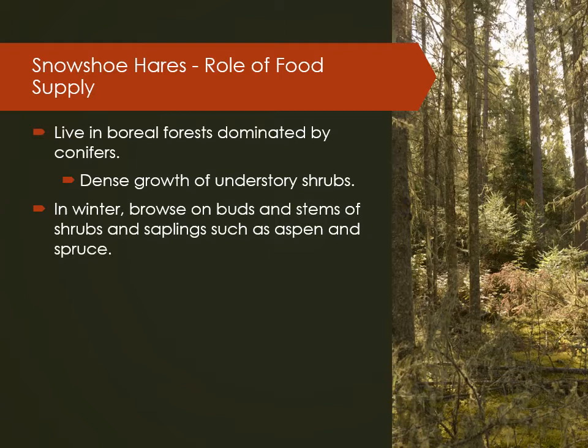Snowshoe hares can reproduce just like rabbits, with an ability to double their population in a year. If they can double their population, they're obviously going to be eating a lot of food. Keith and his colleagues saw snowshoe hare population densities of somewhere from 1,100 to 2,300 per square kilometer. The fluctuations in these populations constantly go up and down — sometimes increasing 10 to 30 times over the years, and in some cases even 100 times higher.